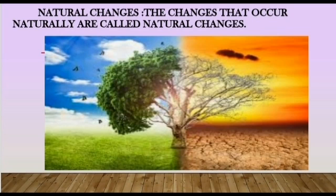Humans also affect ecosystems by reducing habitat, overhunting, overgrazing, use of pesticides or fertilizers and other influences. Changes like the ripening of a fruit and spoiling of milk occur naturally. These are called natural changes.